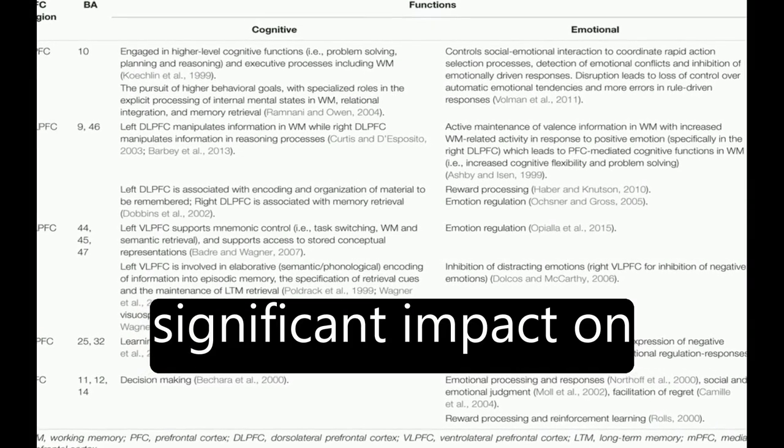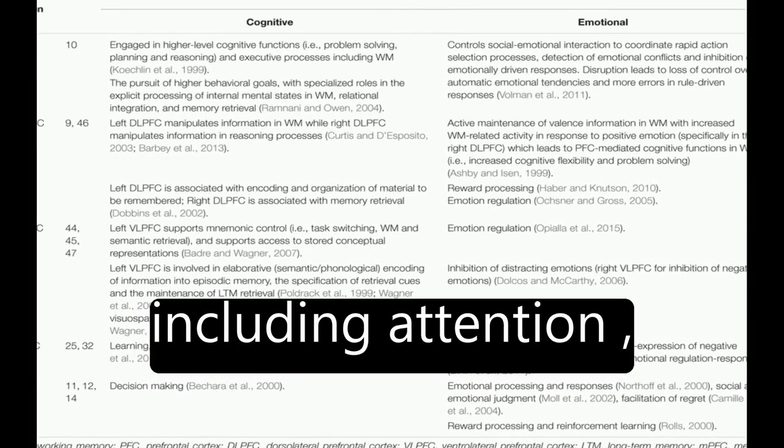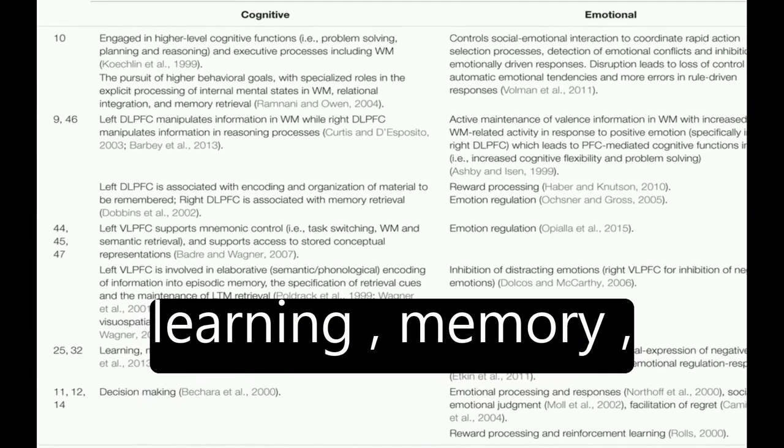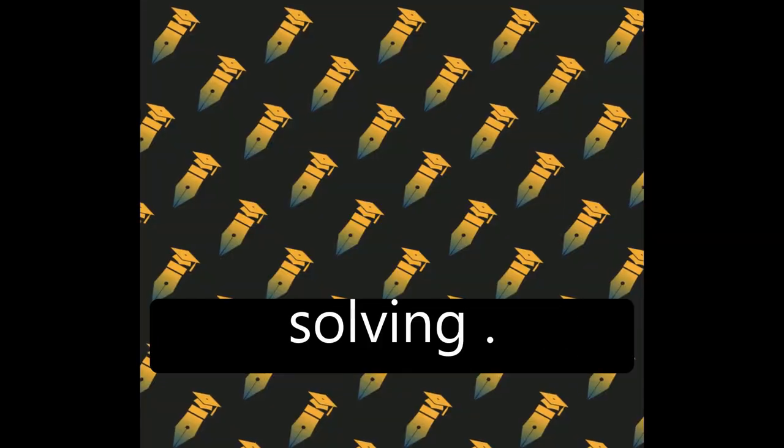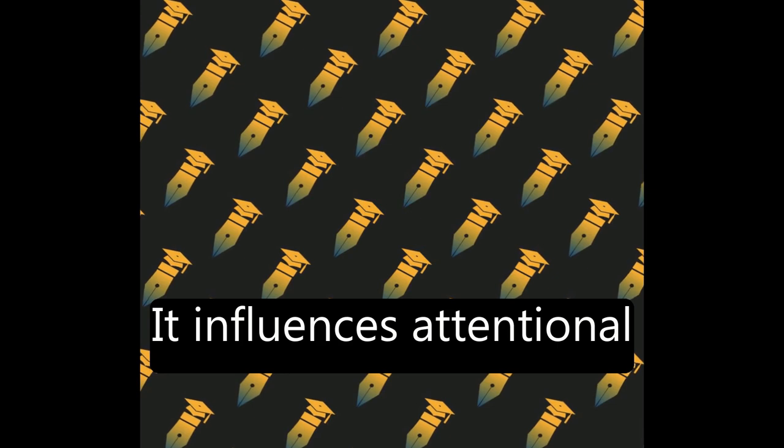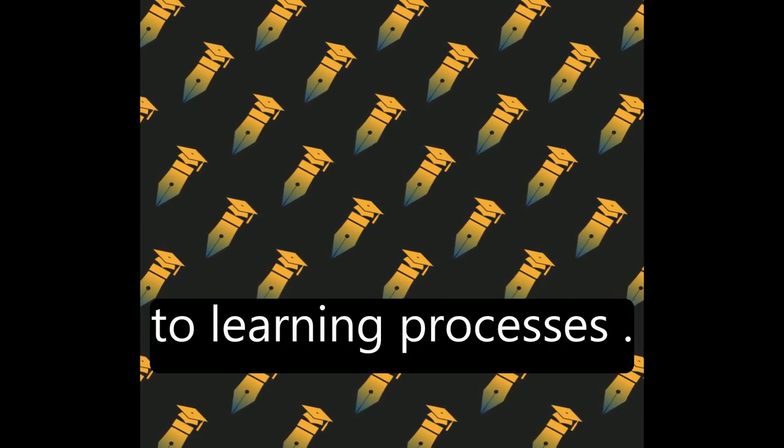Emotion has a significant impact on cognitive processes, including attention, learning, memory, reasoning, and problem-solving. It influences attentional control, which is linked to learning processes.